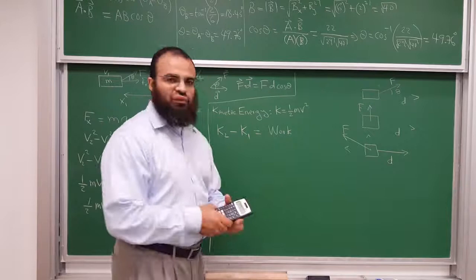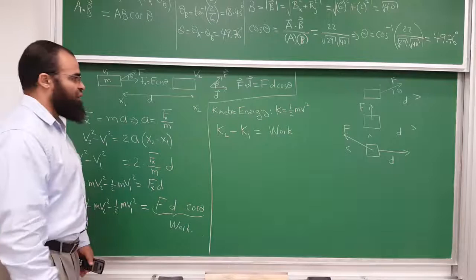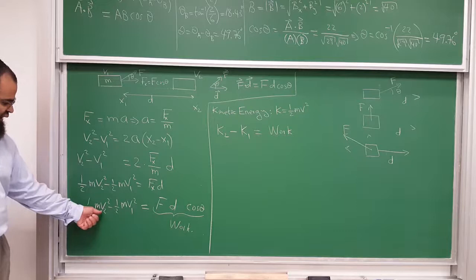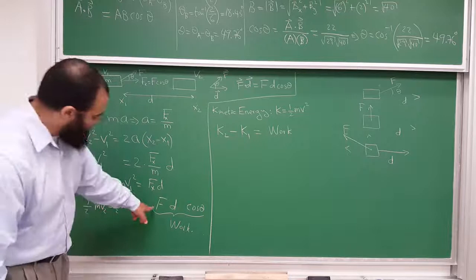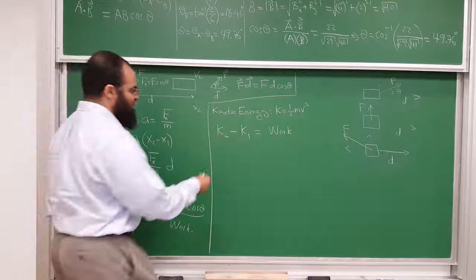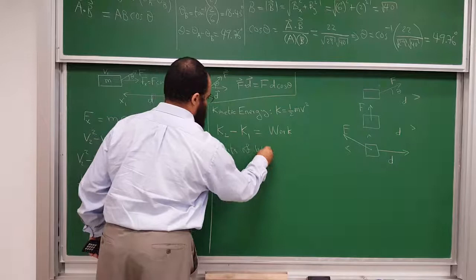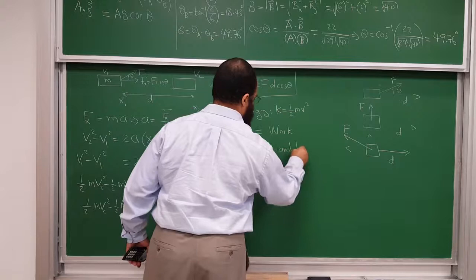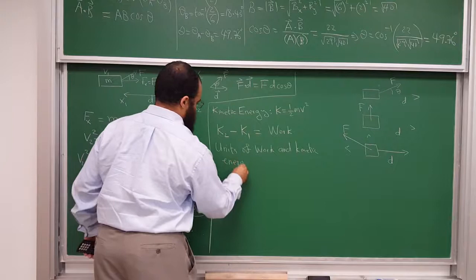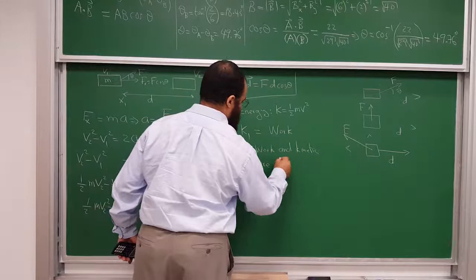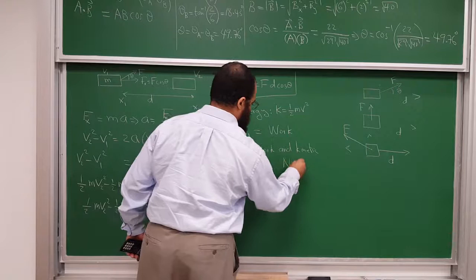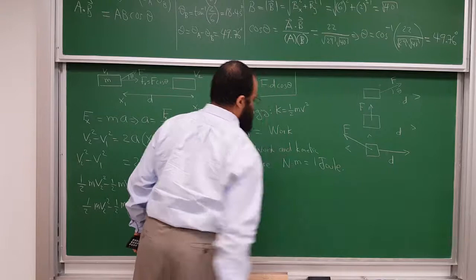What are the units of work? The units of work would be kilograms times meters squared per second squared, or you can look at it as force times distance — so newtons times meters. The units of work and kinetic energy are the same: newton-meters, and we call that a joule. One joule equals one newton-meter.